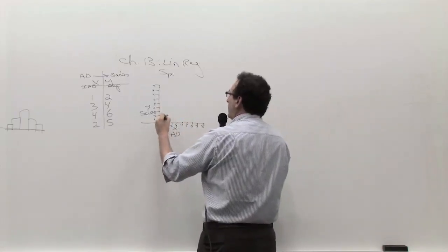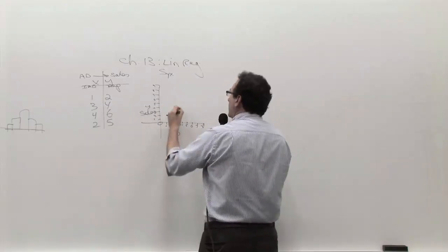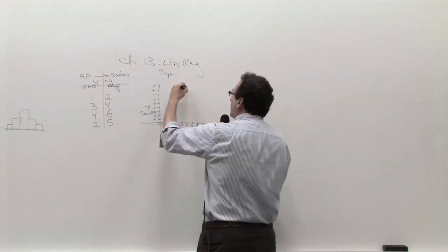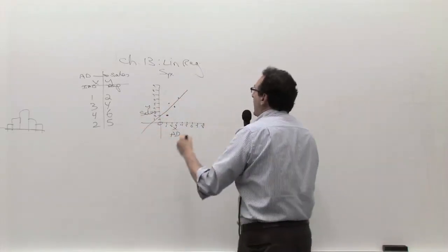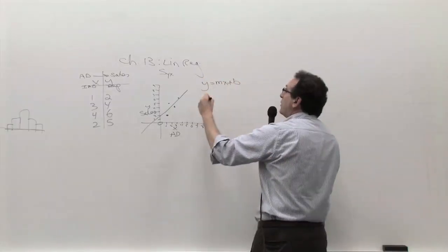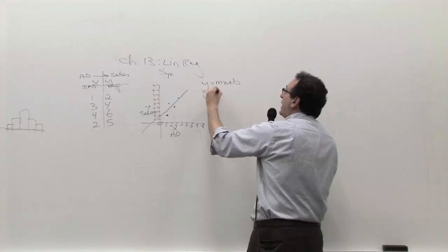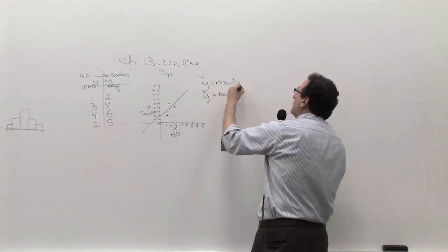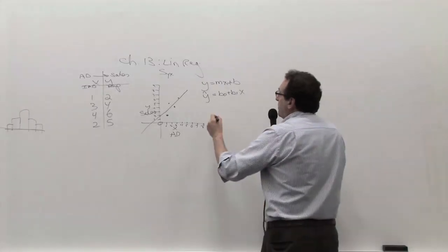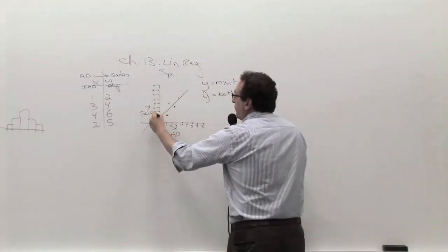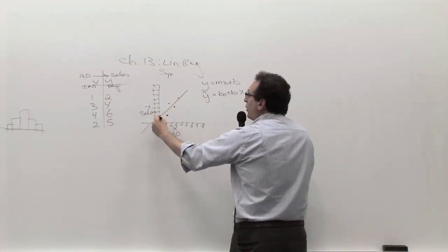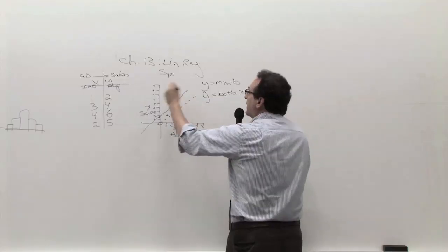One of the X to the first dot is here. The second dot is three and four. Four and six is up here someplace, and two and five is over here. We said last time that a good line that seems to fit the data would be something like this.